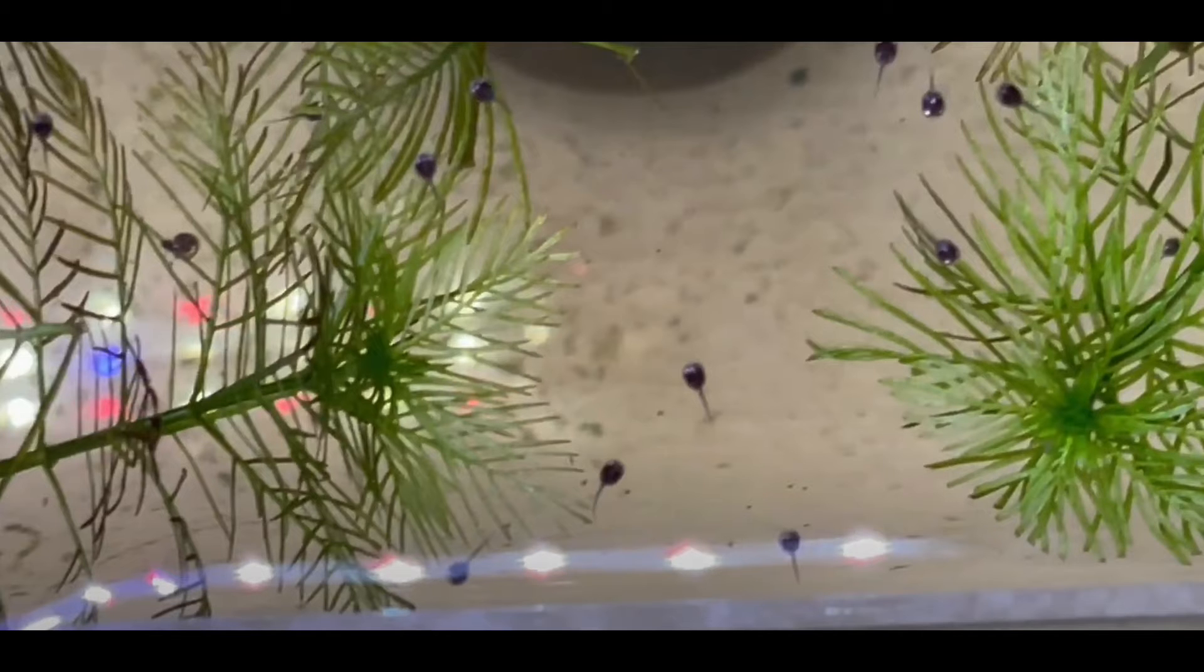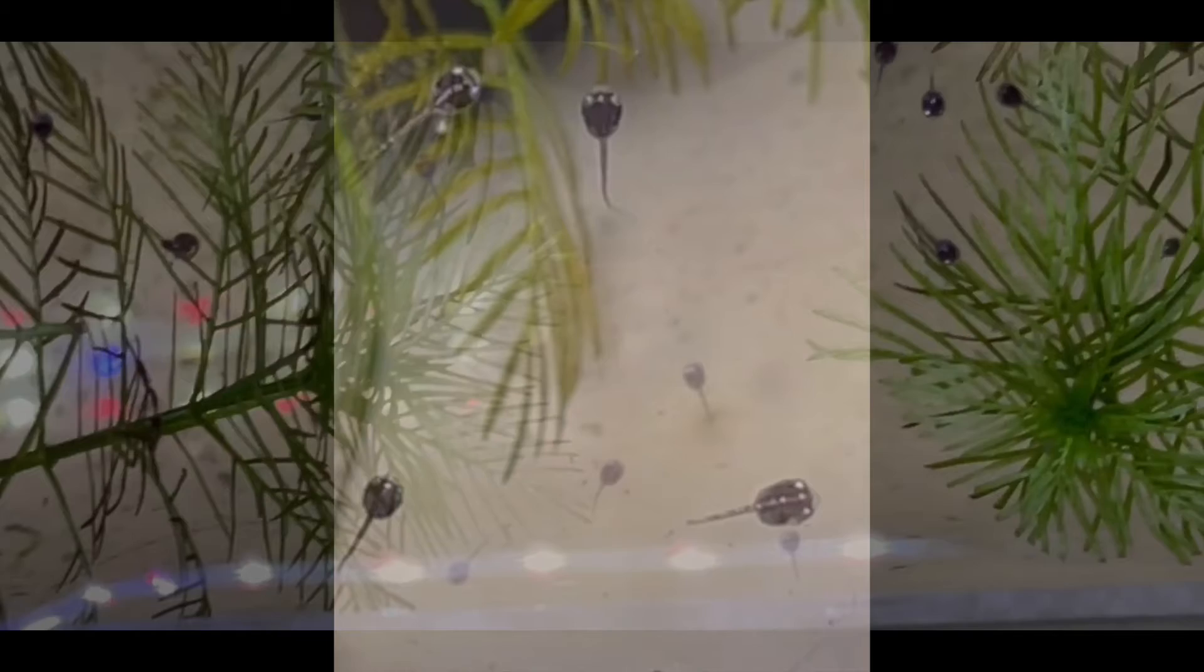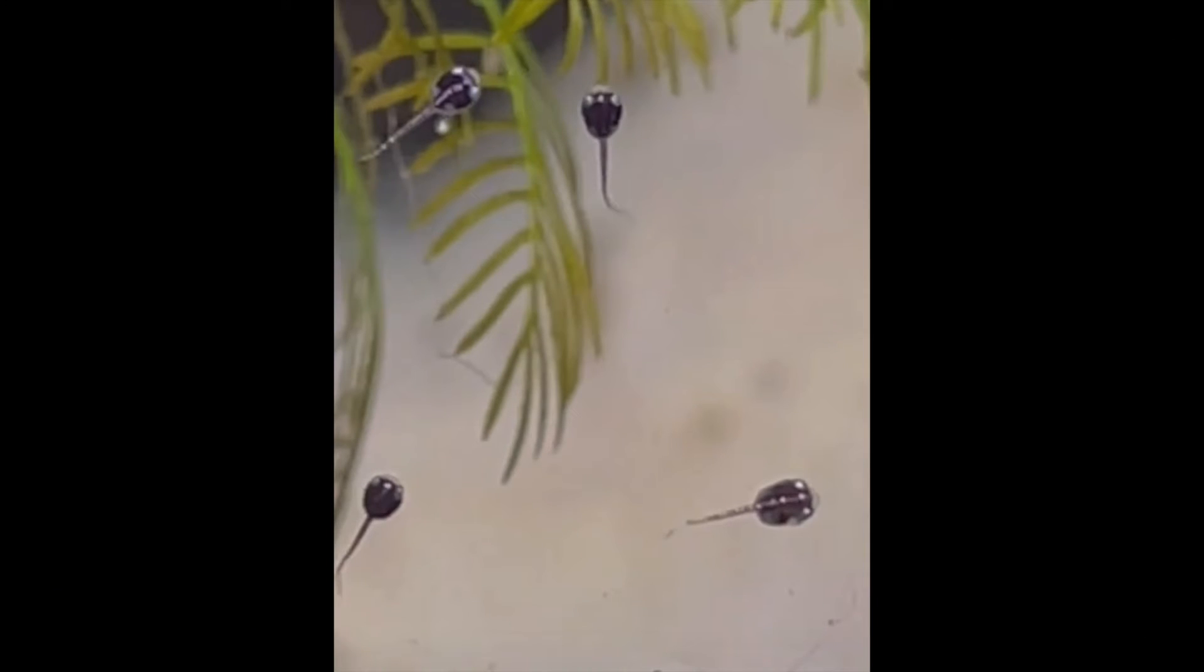Little round bodies, skinny tail. Their bodies start to elongate a little bit. This is a side view after they've eaten some brine shrimp.